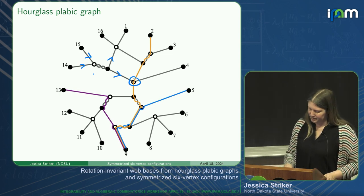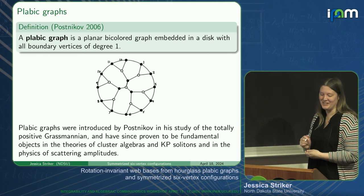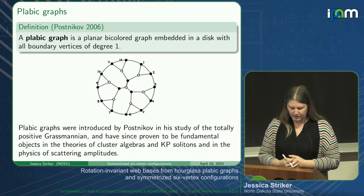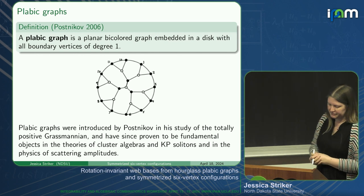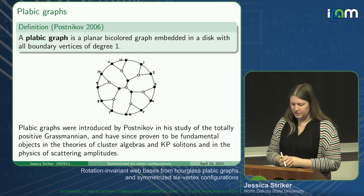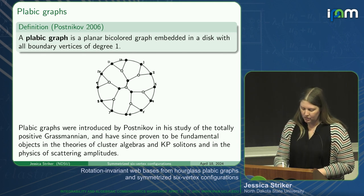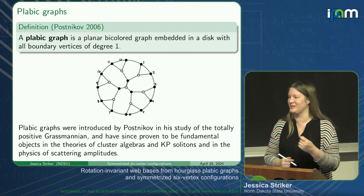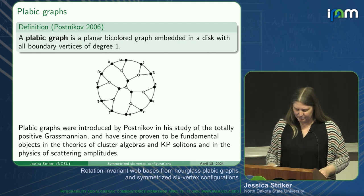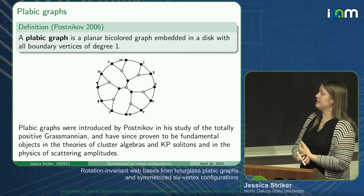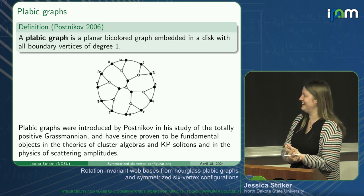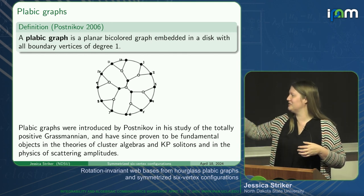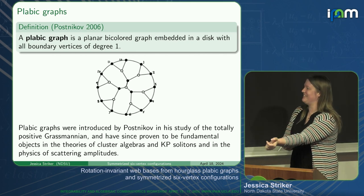The reason we called these hourglass planar bipartite graphs is because they are indeed planar bipartite graphs, or plabic graphs. A plabic graph, as defined by Postnikov, is a planar bicolored graph embedded in a disk with all boundary vertices of degree one. Plabic graphs don't actually need to be bipartite, but it's important that they're embedded in a disk and have two colors. These plabic graphs end up being very useful in the study of cluster algebras, the totally positive Grassmannian, and KP solitons.